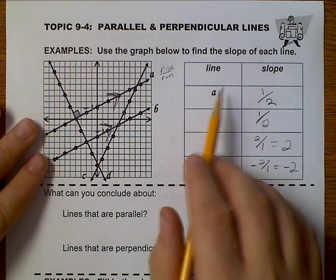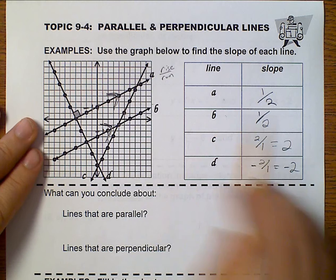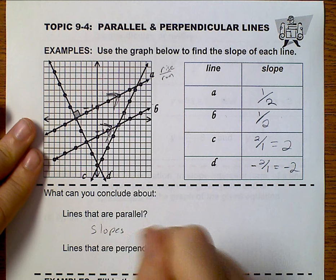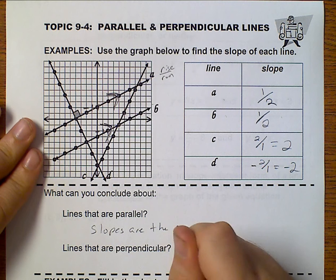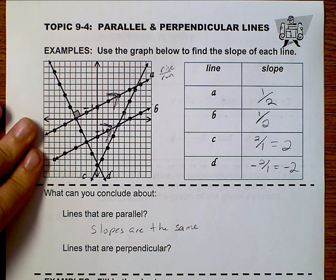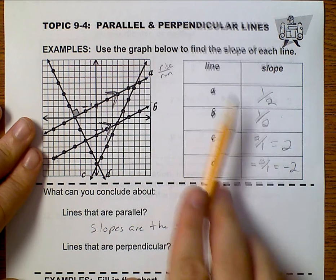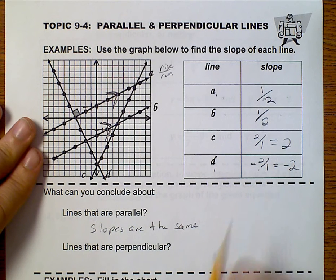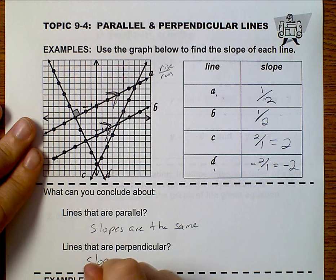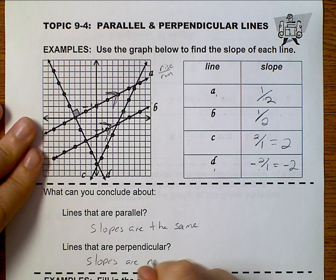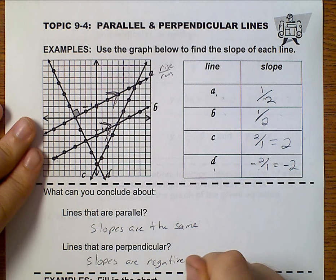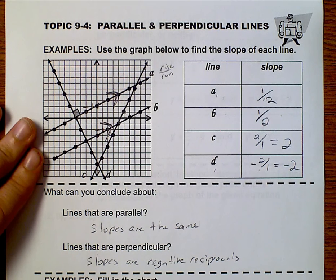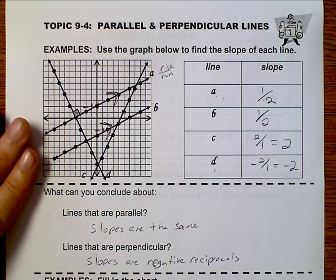So A and B are parallel. And we notice about their slopes, their slopes are the same. And then if we look at A and D, 1 half, negative 2 over 1, the slopes are negative reciprocals. And we'll go over how to do that here right now.